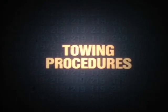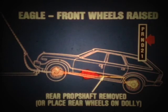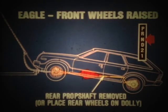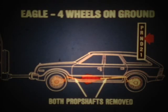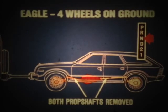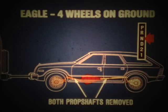Towing procedures for Eagle models are somewhat different from those used on Jeep vehicles equipped with the 219 case. If you tow an Eagle with the front wheels raised, place the transmission selector lever in neutral, be sure the parking brake is released, then either remove the rear prop shaft or place the rear wheels on a dolly. For recreational purposes, Eagles may be towed with all four wheels on the ground. In this situation, be sure to remove both prop shafts. However, the transmission, transfer case, and axles must be in good operating condition; if not, the front or rear wheels must be raised.